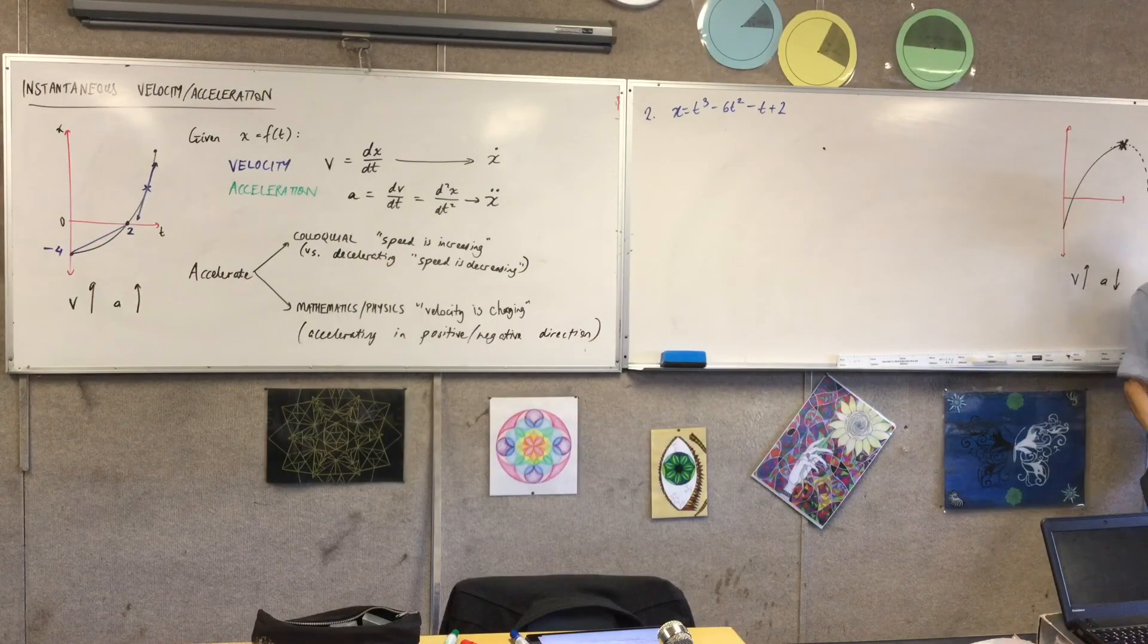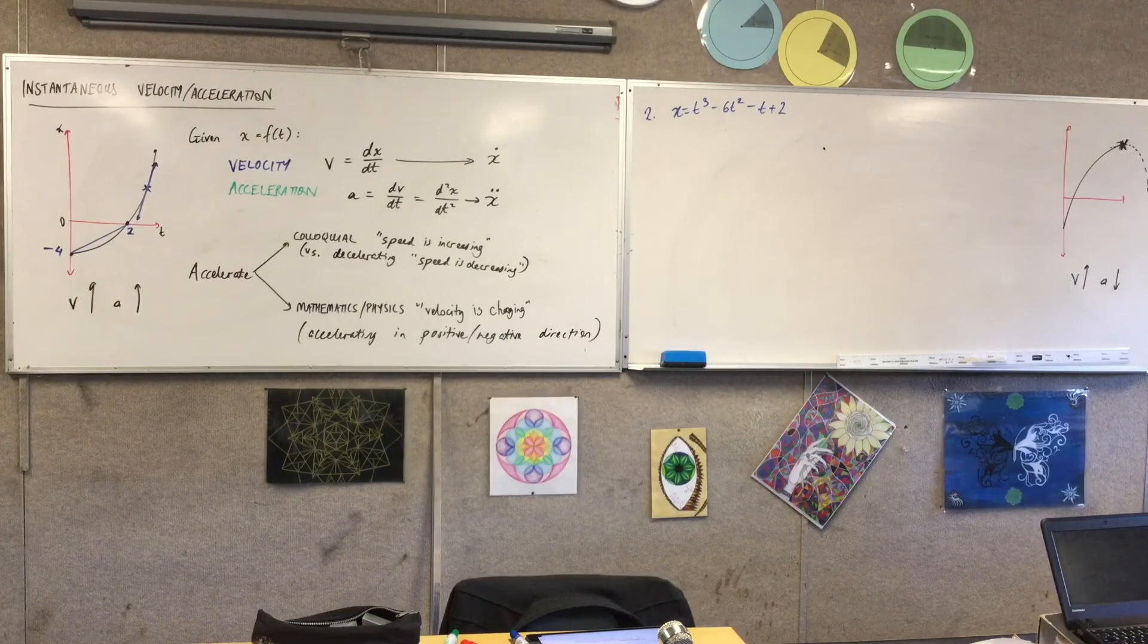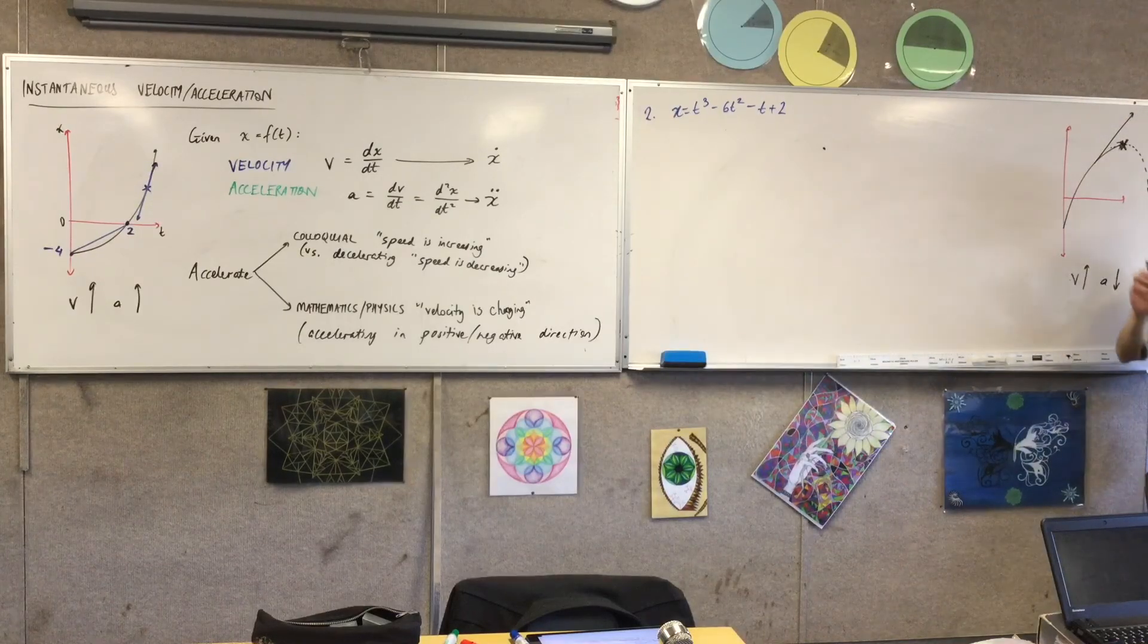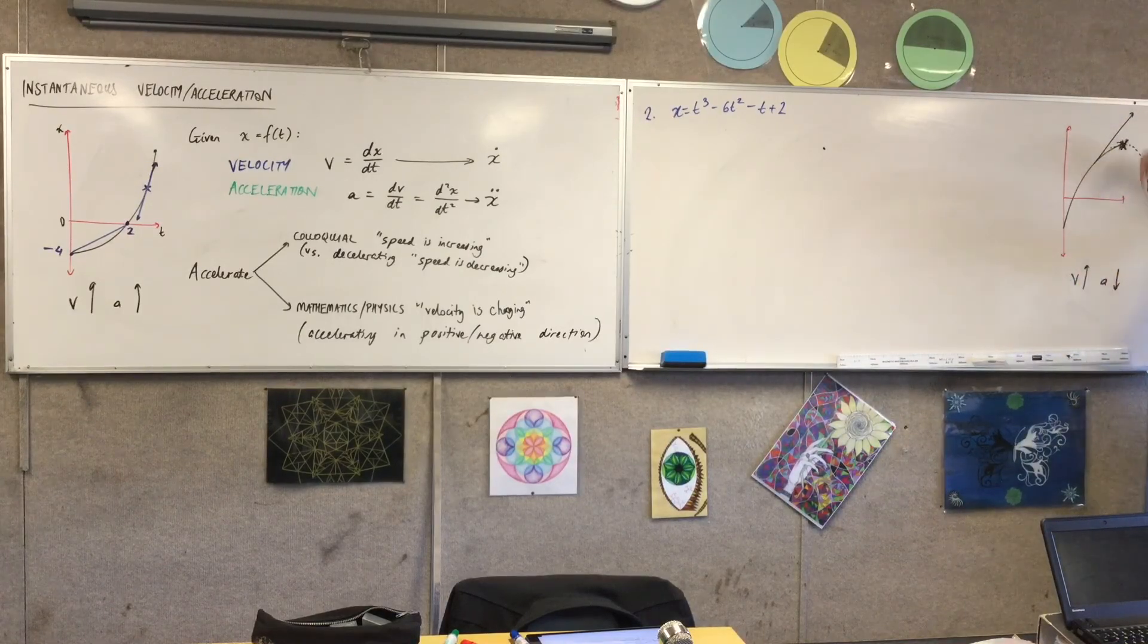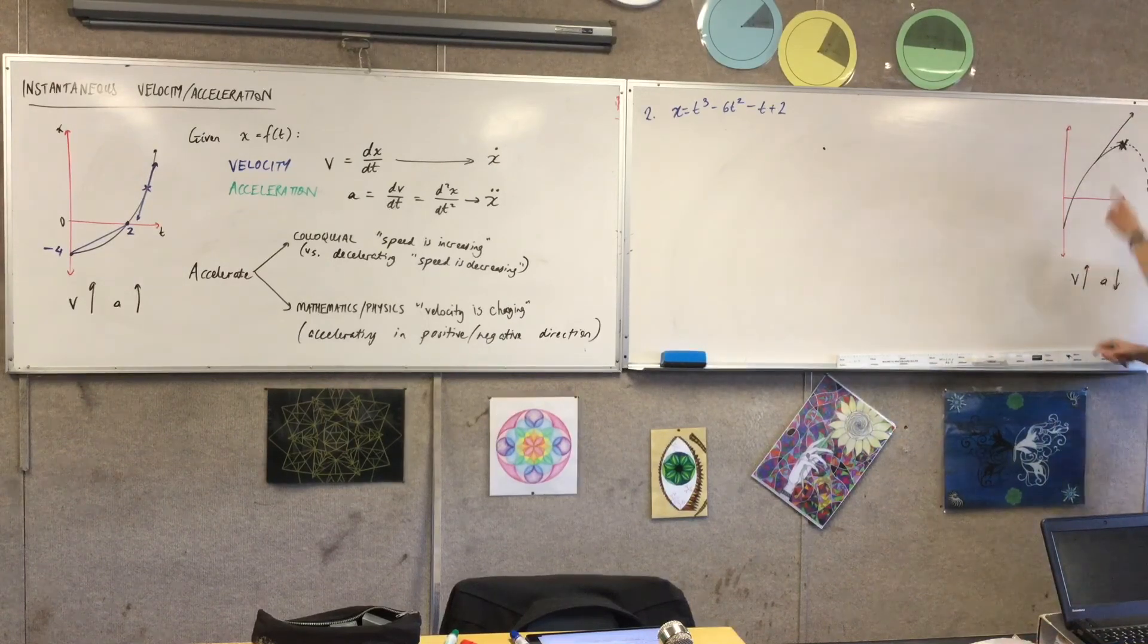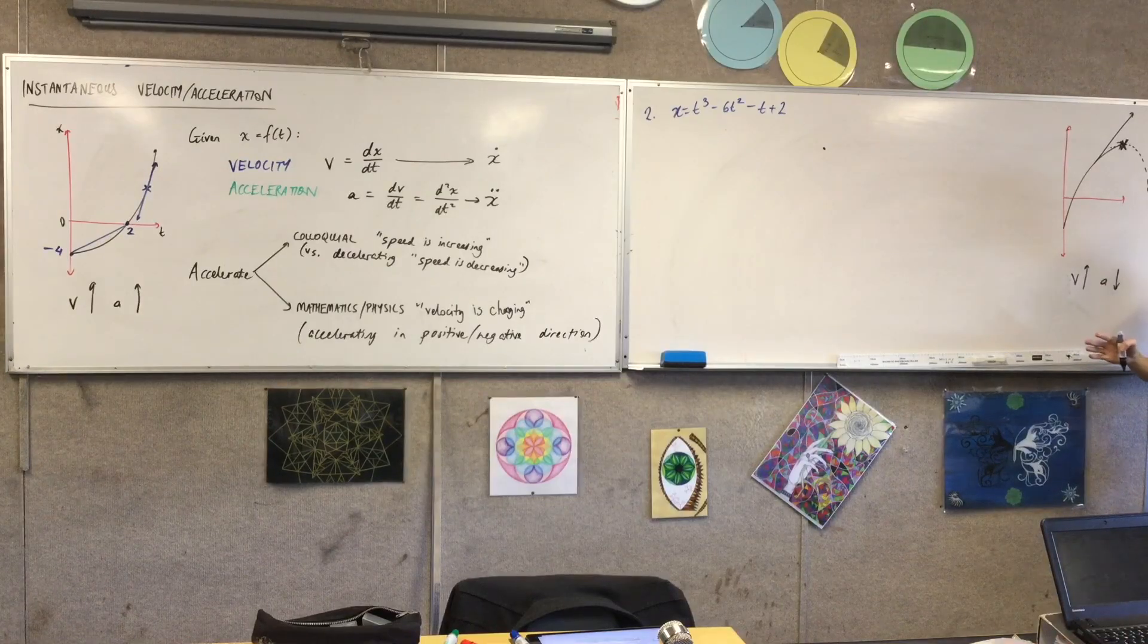What would it look like if acceleration was zero? If I stopped accelerating you? Oh, you'd just be going at a constant velocity. It'd be at a constant velocity. Nothing's slowing you down, accelerating in the negative direction. Nothing's speeding you up, accelerating in the positive direction. This object here is experiencing no acceleration. Does that make sense?